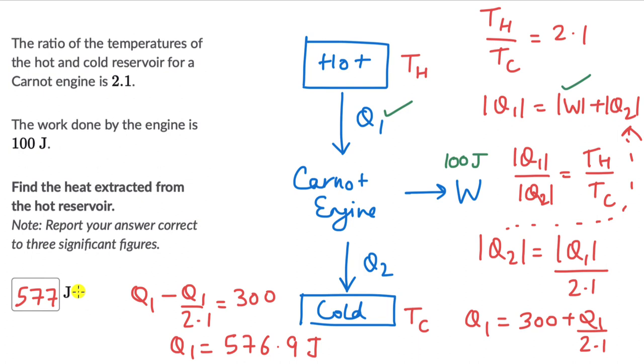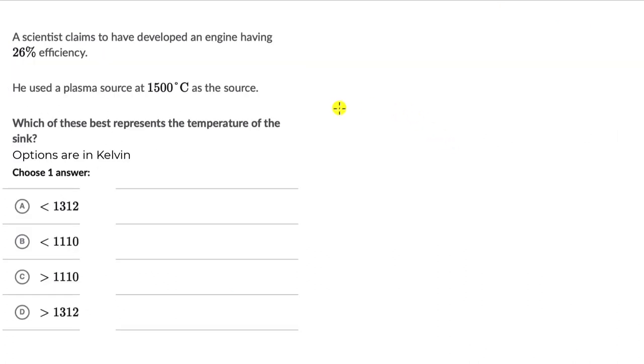Let's look at one more question. Now here we have a scientist who claims to have developed an engine having 26% efficiency. He used a plasma source at 1500 degree Celsius as the source. Which of these best represents the temperature of the sink? We need to choose one answer out of these four options.